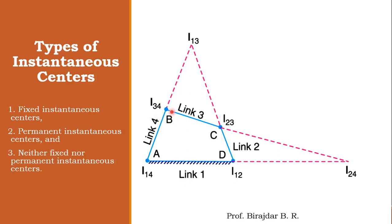The third type is neither fixed nor permanent instantaneous centers. I₁₃ and I₂₄ fall into this category because there is no direct contact between those two links, and their positions continuously change. These are the three basic types of instantaneous centers.